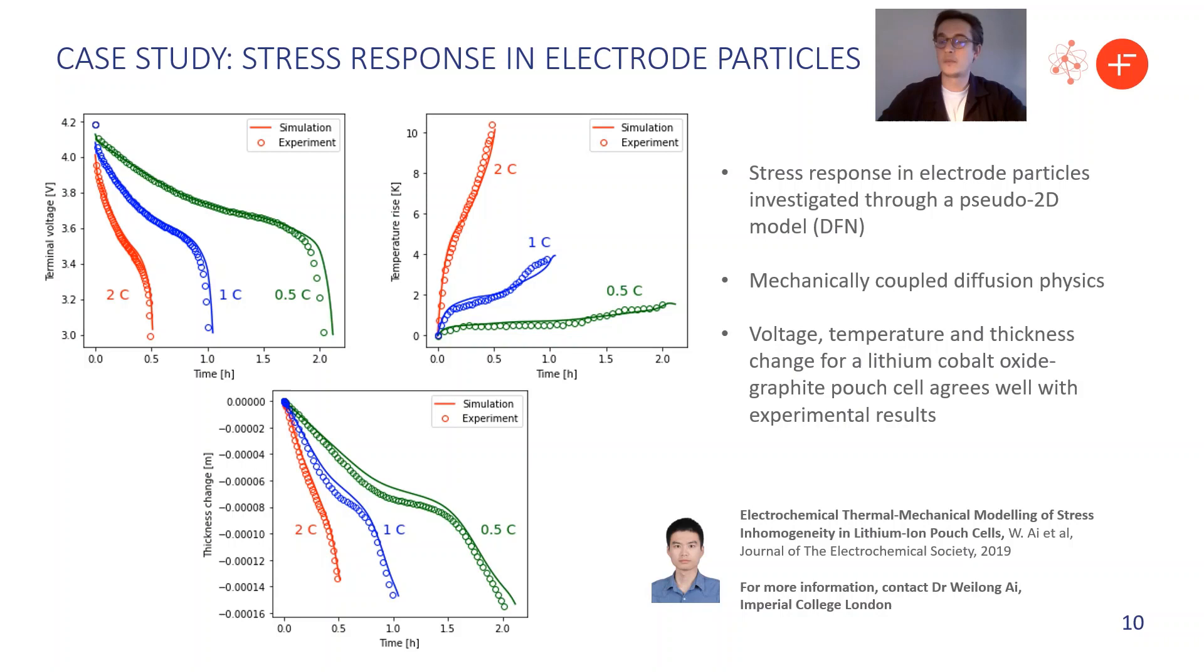And you can take this model now and you can combine it with any model. So it's not just like, here's your one model with stress. I can combine this with a single particle model. I can use it in the DFN straight away. And this is this plug and play element of PyBaMM really coming into its own. And you can see some of these plots here where we've got some nice comparisons of experimental data.